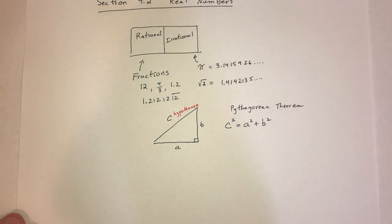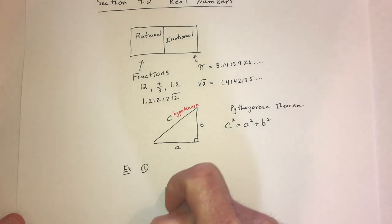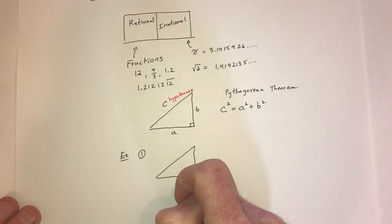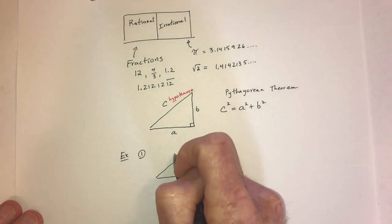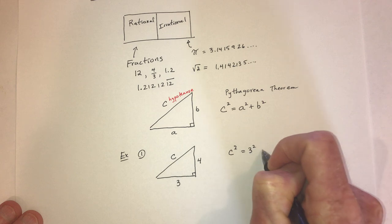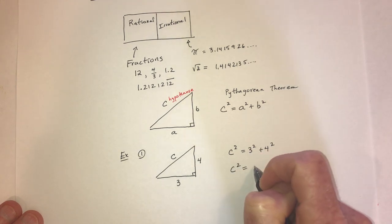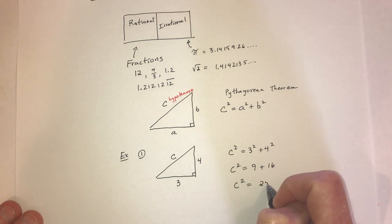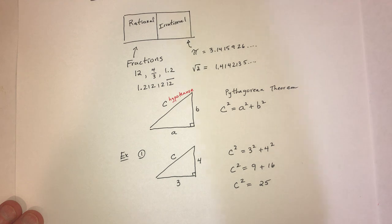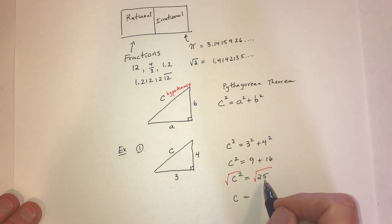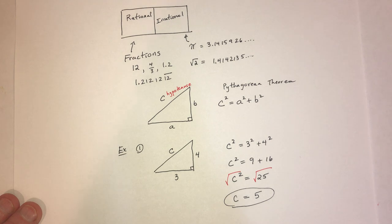As an example: suppose you have a right triangle where the two legs are 3 and 4. How much is the hypotenuse? Using the formula: c squared equals 3 squared plus 4 squared. 3 squared is 9, 4 squared is 16, and 9 plus 16 is 25. Taking the square root of both sides, c equals the square root of 25, which is 5. That's a rational number.